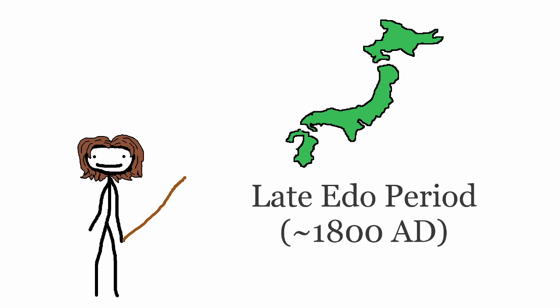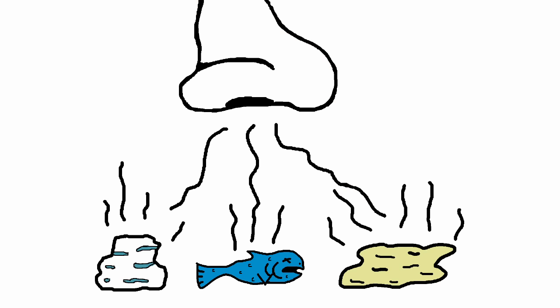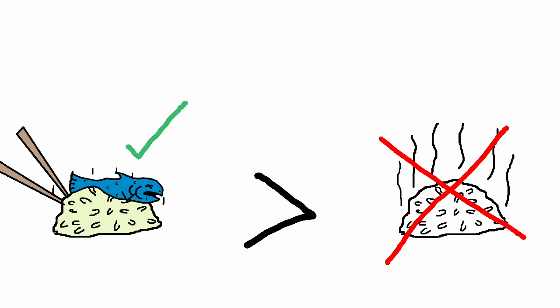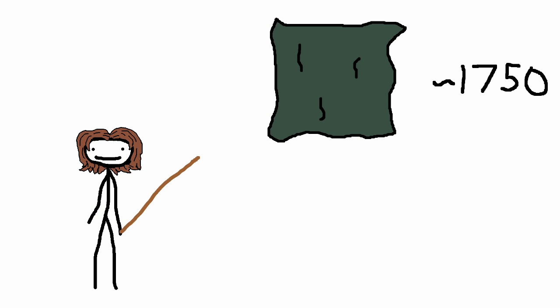Later on, during the late Edo period, people started pickling the rice, which drastically shortened the required fermentation time. So now, rather than smelling like blue cheese, fish, and vinegar, it just smelled like fish and vinegar. Go figure. People found this rice to be much more palatable, so it began to be eaten alongside the fish.